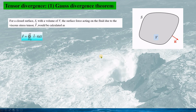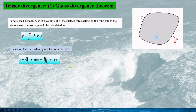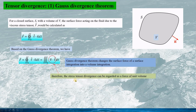For a closed surface S with a volume V, the surface force acting on the fluid due to the viscous stress tensor TAU would be calculated as shown. Applying the Gauss divergence theorem, we can change the integral on surface S into a volume integral on V, giving this expression. The stress tensor divergence can be regarded as the force per unit volume.